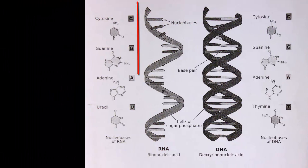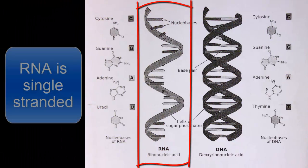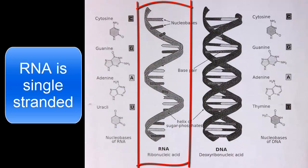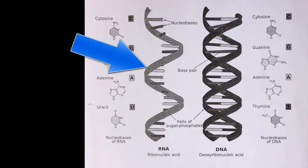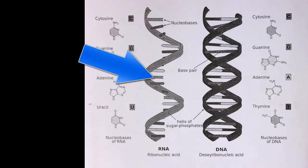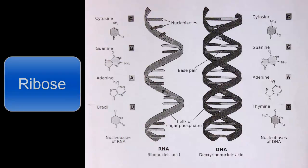RNA, on the other hand, is a single-stranded molecule that is transcribed from the DNA code. RNA has a single sugar-phosphate backbone with bases coming off of the sugar. The sugar involved in RNA is ribose.